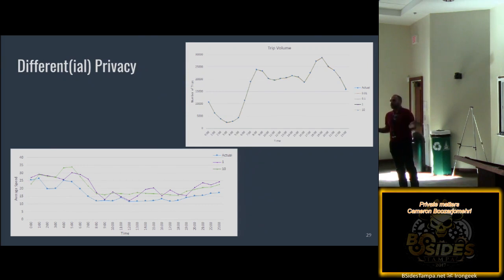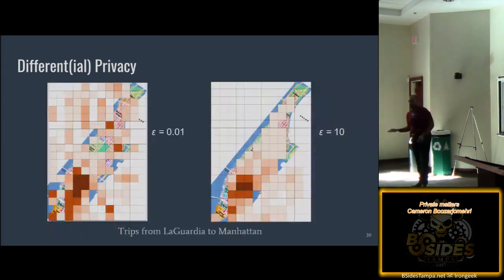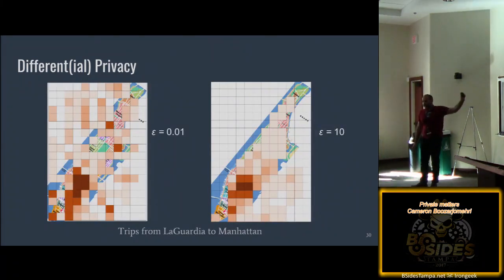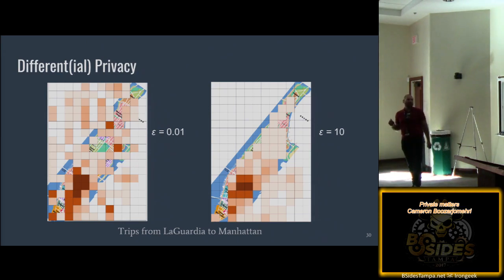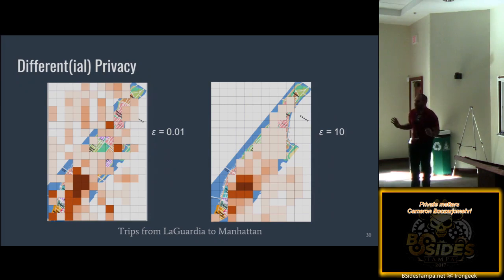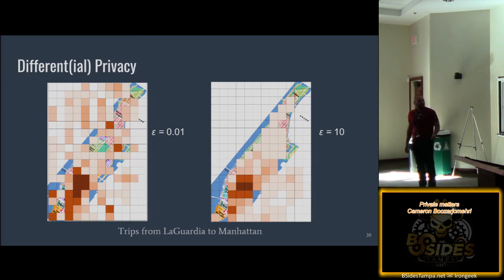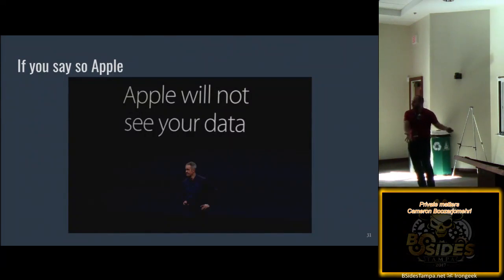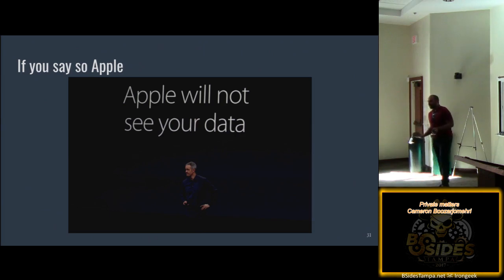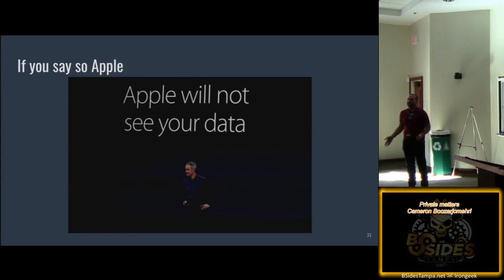What does differential privacy look like in geospatial data? These are trips from LaGuardia to Manhattan. For city planning purposes, I want to see which drop-off locations are most popular. If I set my epsilon value really high, the trend maps to Manhattan pretty well. If I set it really low, people appear to be getting dropped off in the river — it looks terrible. But the goal was city planning: you can apply differential privacy to achieve these goals without letting any individual in the data set be identified. Apple says that if you opt into iCloud data sharing, they will apply differential privacy so they can get statistics — though I'll reserve judgment on that.